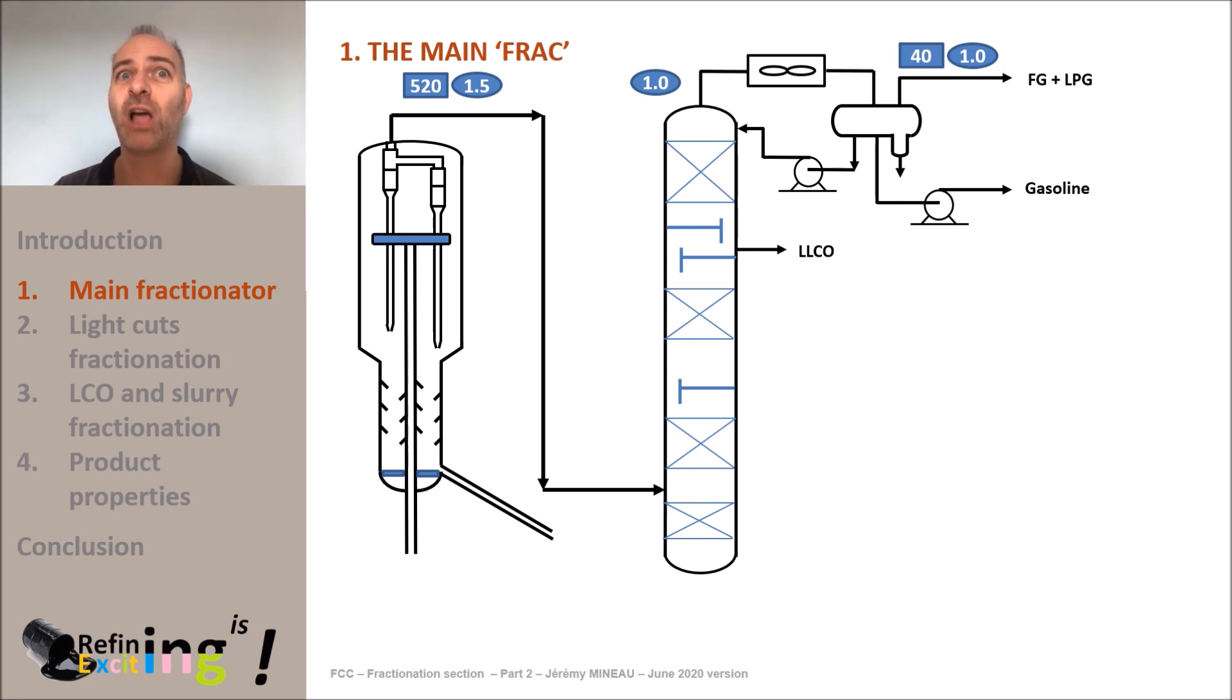A little bit lower in the column, an HALCO cut will also be extracted. This cut is the mixture of the heavy part of the LCO and the light part of the HCO. Finally, in the tower bottoms, we get the slurry.